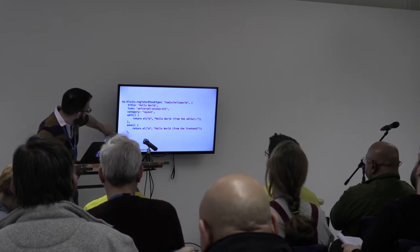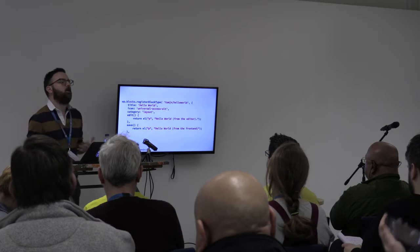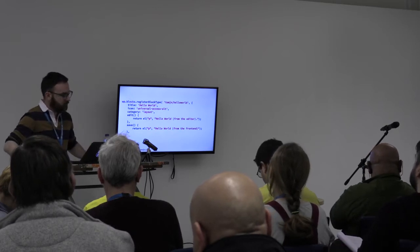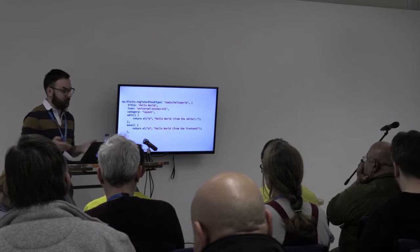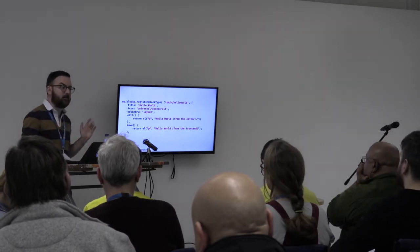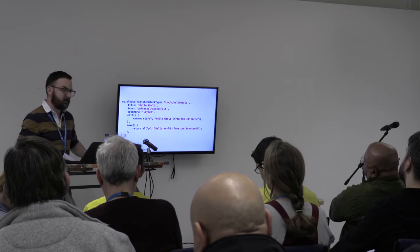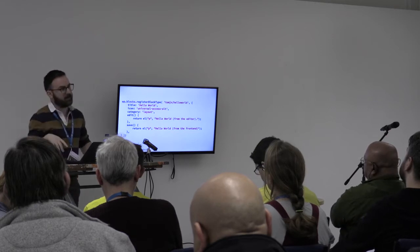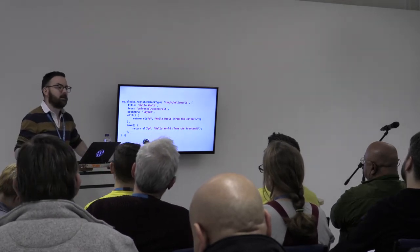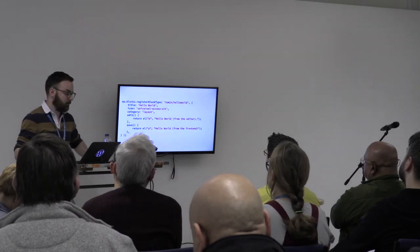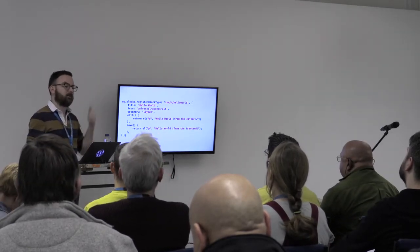Then you give it an object with some parameters telling Gutenberg all about this block. Some are pretty straightforward, like the title — 'Hello World'. As I go around in the interface, that will appear in the inserter where I choose from all the blocks. If I hover over it, it will say hello world in the little snippet on the side, and in the sidebar as well when I click on the block and it gives me more options.